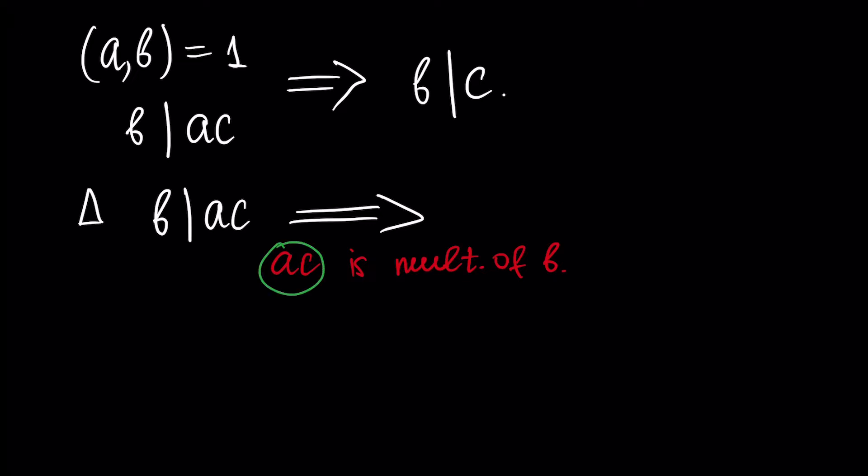And since AC is a multiple of B, from previous results we know that the set of common divisors of AC and B coincide. In particular, GCD of AC and B is equal to B.